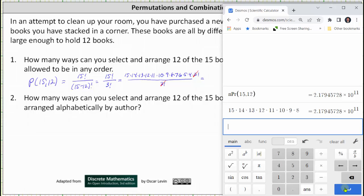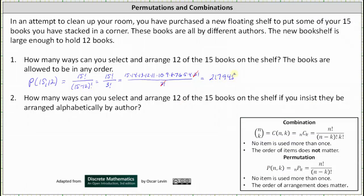The number in decimal notation is 217,945,728,000, which means there are 217,945,728,000 ways to select and arrange 12 of the 15 books on the shelf when the order matters.